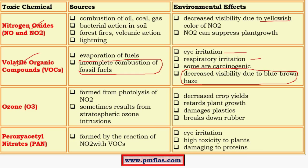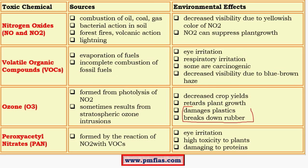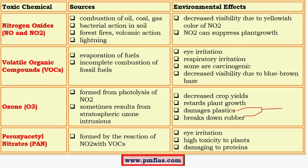Ozone is a greenhouse gas formed from photolysis of NO2 — photolysis meaning synthesis under the influence of sunlight. It sometimes results from stratospheric ozone intrusions into the lower troposphere, but the significant source is photolysis. Its effects include decreased crop yield, retarded plant growth and damage to plastics and rubber — ozone causes cracking in rubber. So to recall: yellowish color is due to nitrogen oxides, blue-brown haze due to volatile organic compounds, and damage to plastics and breakdown in rubber is due to ozone.